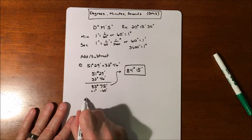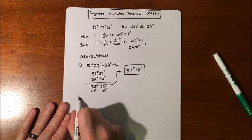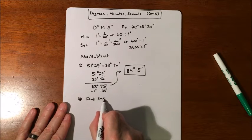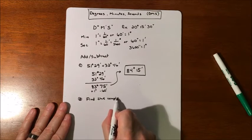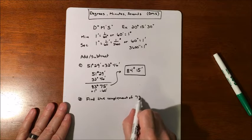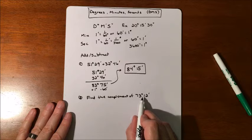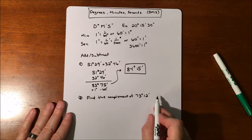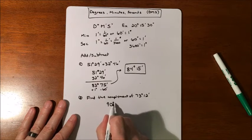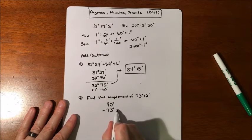Subtracting. Now subtracting we're going to do a little bit different. Subtracting is still subtracting, but we're going to do a different type of problem. We're going to find the complement of 73 degrees, 12 minutes. Now the complement means this angle and another angle are going to make 90 degrees. So rather than adding, because I don't know what to add to it, we're going to take 90 degrees and we're going to subtract 73 degrees, 12 minutes.